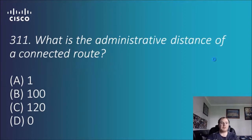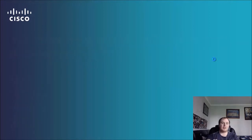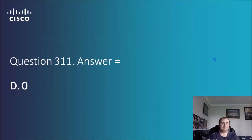Question 311: what is the administrative distance of a connected route? The options are 1, 100, 120, or 0. If it's connected, it's trusted the most — it's 0.